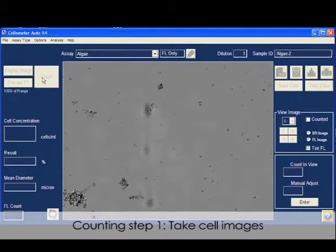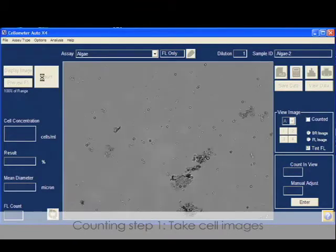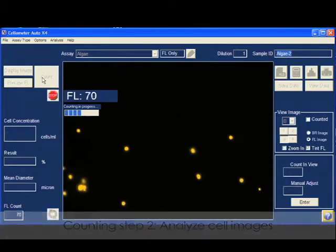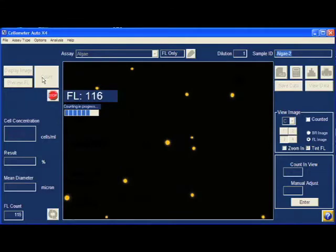Cellometer AutoX4 takes cell images in bright field and in fluorescence. Cell images are automatically analyzed based on preset parameters for algae cells. Other debris is excluded by its lack of fluorescence.